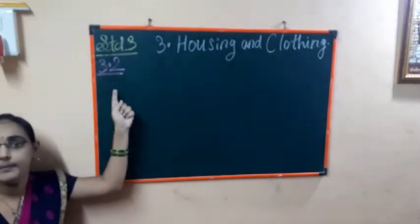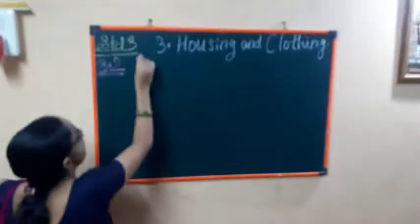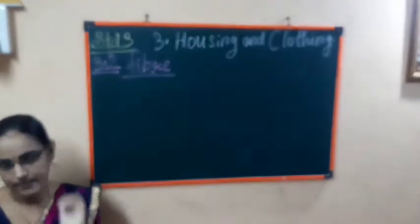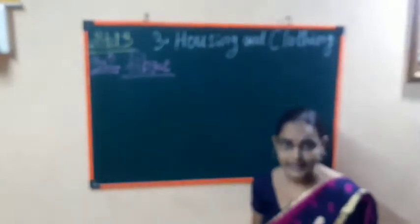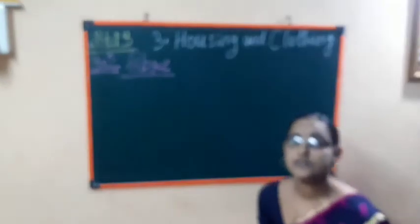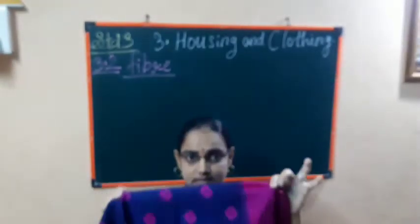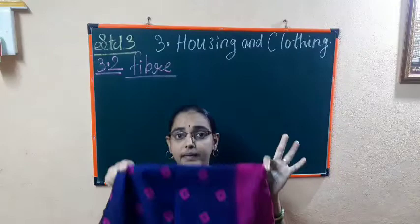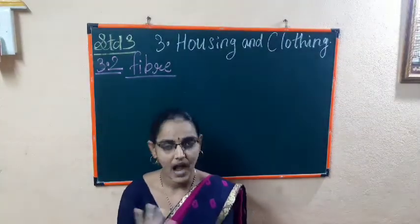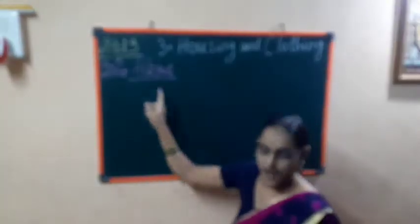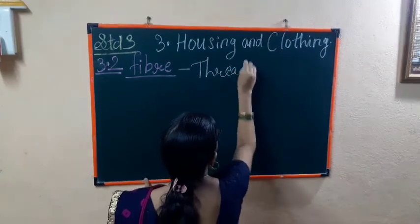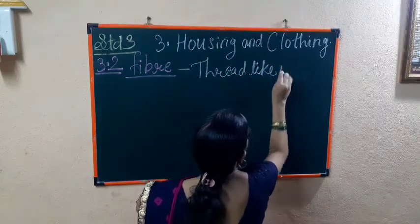We are going to learn about point 3.2, and the name of the point is Fiber. What is fiber? Fiber is exactly the material that is used for making different kinds of clothes. Fiber is the material which is used for making clothes. Fiber is also a thread-like material.